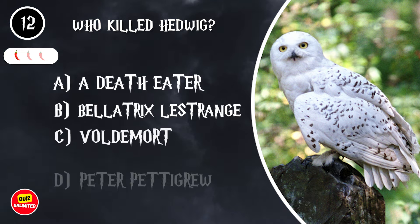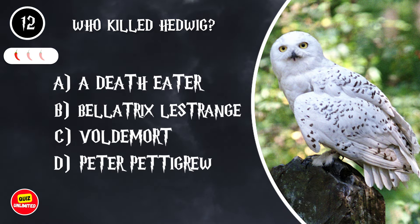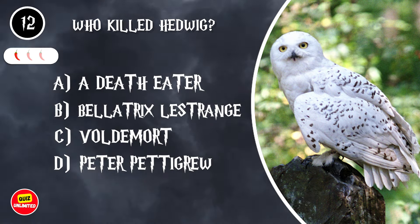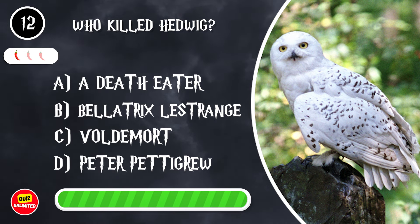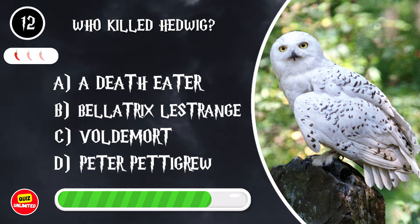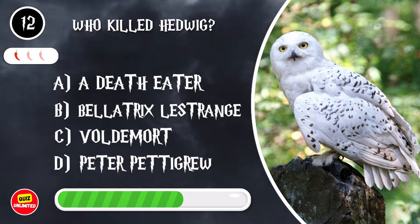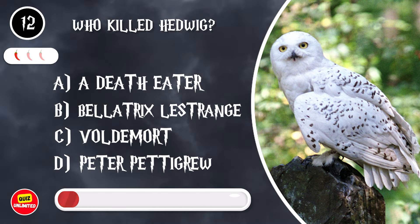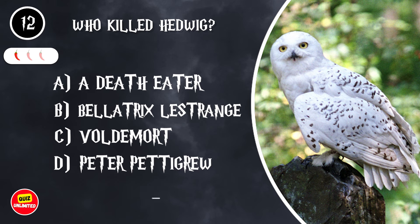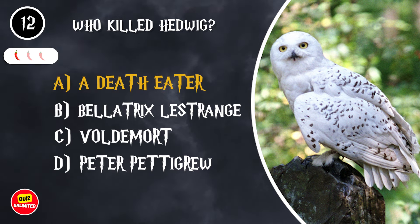Who killed Hedwig? A. A Death Eater. B. Bellatrix Lestrange. C. Voldemort. D. Peter Pettigrew. It's A. A Death Eater.